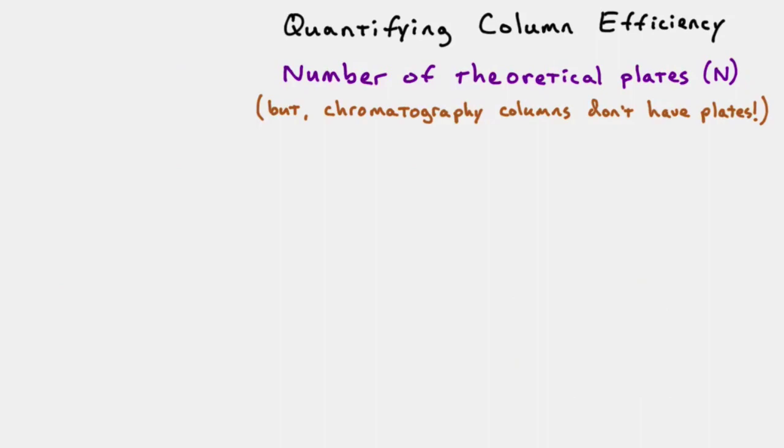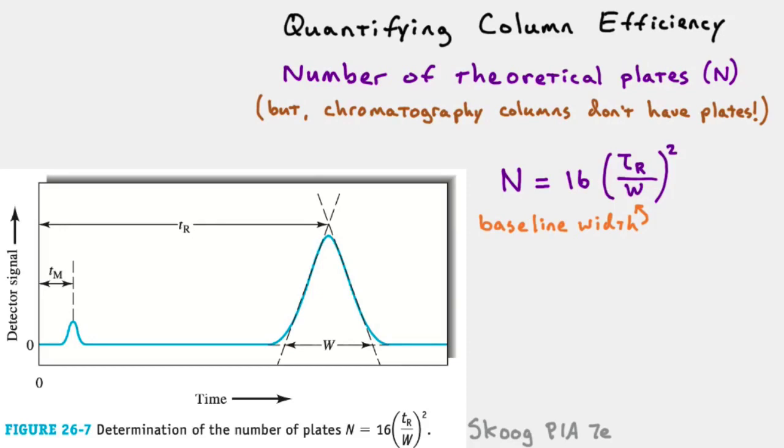The useful thing about calculating theoretical plates is that the math is actually really straightforward. Skoog derives this in the textbook. I'll just give the answer here. Say you have a chromatogram. You have your dead time or void time, TM. You have your peak here. You take the retention time and divide it by the width. This would be baseline width. The baseline width is a little tricky to calculate, so you have to take the line of your peak and extrapolate it down to the baseline, and then see where it crosses the baseline, and take that as one side of the peak, and then take the intersection of these dashed lines on the other side of the peak, and then that's your width. Then you multiply it by 16, and then you get n.